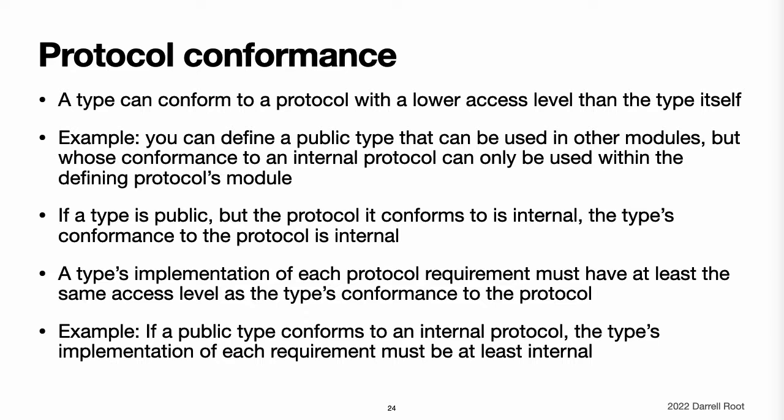When you write or extend a type to conform to a protocol, you must ensure that the type's implementation of each protocol requirement has at least the same access level as the type's conformance to that protocol. For example, if a public type conforms to an internal protocol, the type's implementation of each protocol requirement must at least be internal. Note, in Swift, as in Objective-C, protocol conformance is global. It is not possible for a type to conform to a protocol in two different ways within the same program.